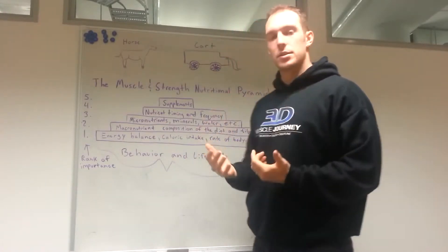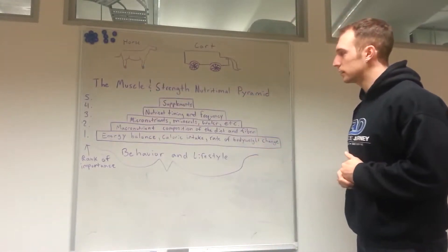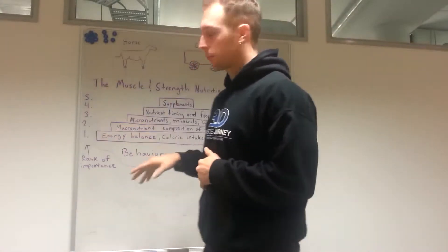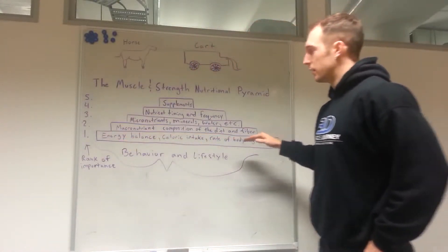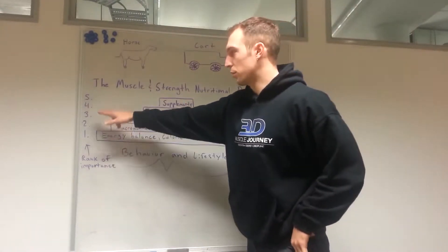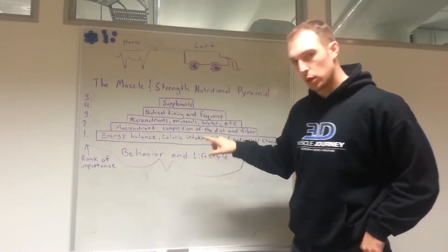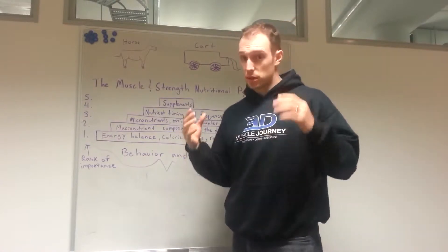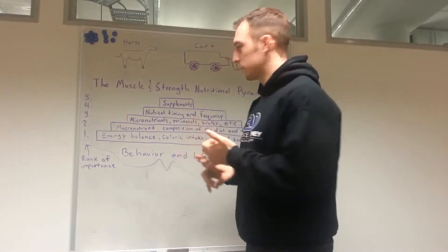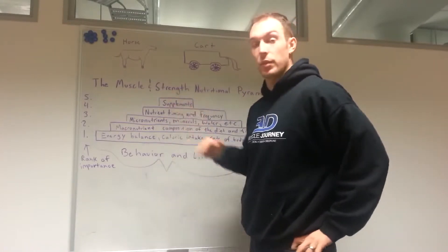So what I decided to do was build what I'm calling the muscle and strength nutritional pyramid. And it is basically a five-step pyramid with the foundation being the most important, and then moving up through levels of less importance as we get into levels two, three, four, and five. And then we have the overarching theme of behavior and lifestyle, which we'll talk about. So this is going to be a six-part series.